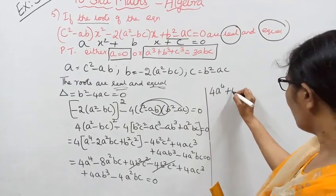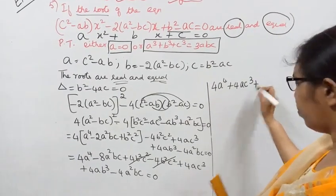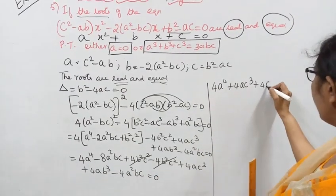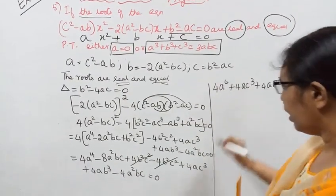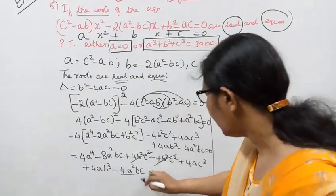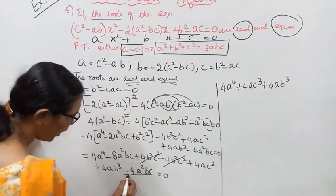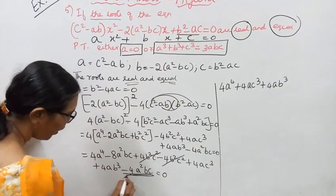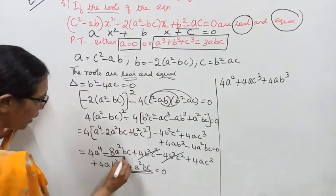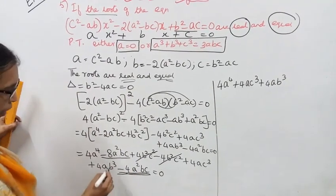Collecting terms: 4a⁴ + 4ac³ + 4ab³ - 4a²bc - 8a²bc = 0, which simplifies to 4a⁴ + 4ab³ + 4ac³ - 12a²bc = 0.